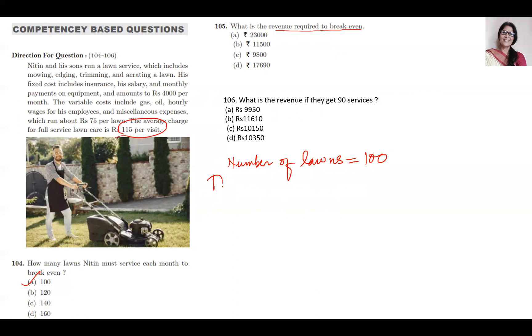And from each he is getting 115, so total revenue at break even equals 100 times 115, which equals 11,500. B is the answer.